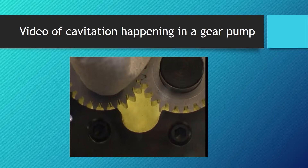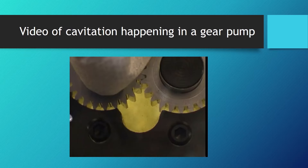Ways to know if you have cavitation happening in your system include the sound — it has a very specific sound of debris rolling around in your pump, like having tiny rocks just tumbling around in your system. Another sign is actual physical evidence. As part of your general maintenance you should be inspecting and replacing the hydraulic oil filter elements at regular intervals based on the duty cycle and how often the application is used. If during inspection you find metallic debris in the filter, it could be a sign that you're experiencing cavitation in the pump.